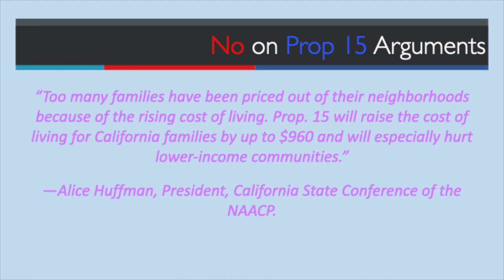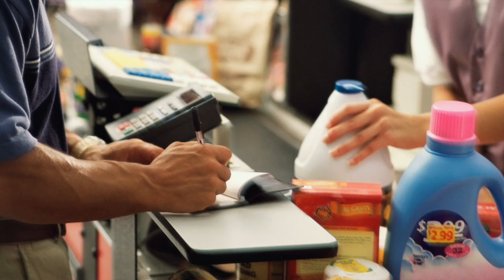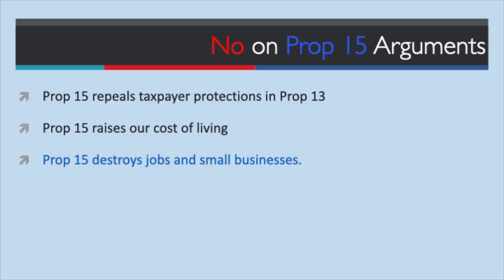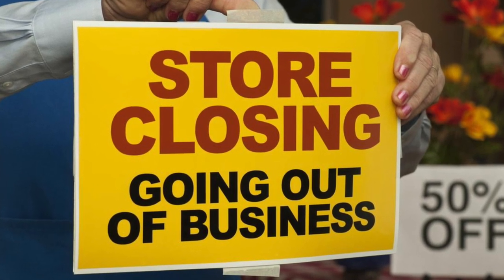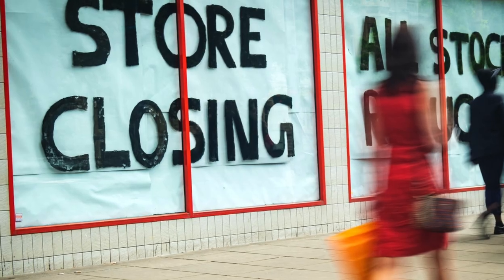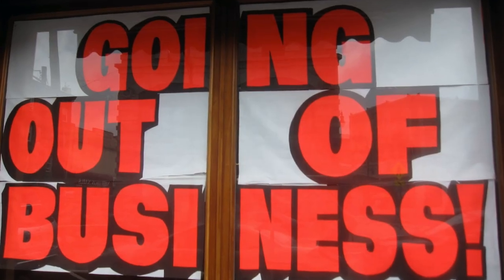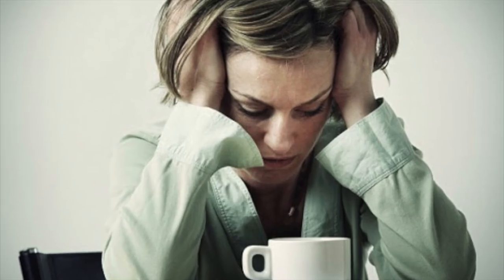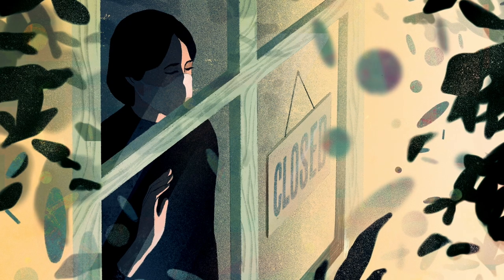Alice Huffman, president of the California State Conference of the NAACP, says: "Too many families have been priced out of their neighborhoods because of the rising cost of living. Prop 15 will raise the cost of living for California families by up to $960 and will especially hurt lower income communities." Most small businesses rent the property on which they operate, and nothing in Prop 15 stops the tax from being passed on to small business tenants. Prop 15 will make the economic crisis worse by devastating small businesses, including neighborhood restaurants, barbershops, and dry cleaners.